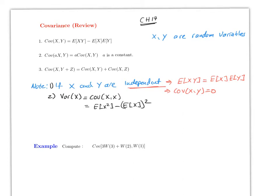Rule number two says the following: a constant multiplying one of the variables just comes out. And this is probably one you forgot already. Rule number three: if you have the covariance of X and then two more random variables, you can split this into two pieces. We're going to use this to prove the homework questions.